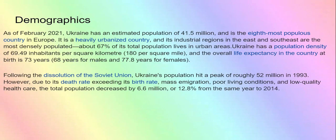About 67 percent of the total population live in urban areas. Ukraine has a population density of 69.49 inhabitants per square kilometer, or 180 per square mile. The overall life expectancy at birth is 73 years — 68 for males and 77 for females, meaning the average female lives nine years more than a male. Following the messy dissolution of the Soviet Union, Ukraine's population hit a peak of roughly 52 million people in 1993, meaning Ukraine has lost around 11 million people since then, with population decreasing by 6.6 million — 12.8 percent — from 1993 to 2014, due to death rates exceeding birth rates, massive emigration to Poland and Russia, poor living conditions, and low-quality healthcare.